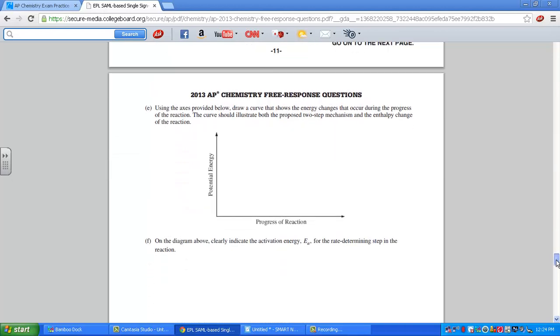This problem continues on the next page. We see an activation energy diagram. Potential energy on the y-axis. Progression of reactants. So as time is going by, reactants turn to products. We want to draw a curve that shows the energy changes that occur during the progression of the reaction.